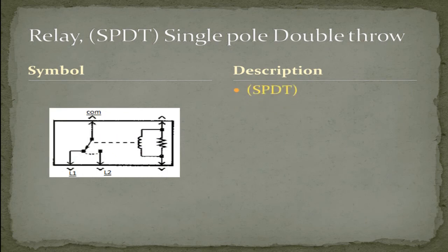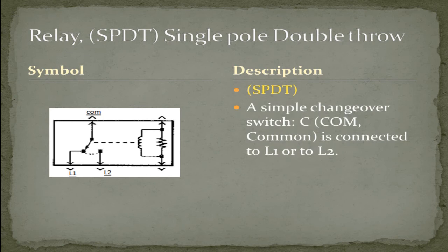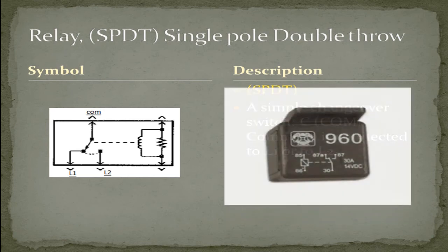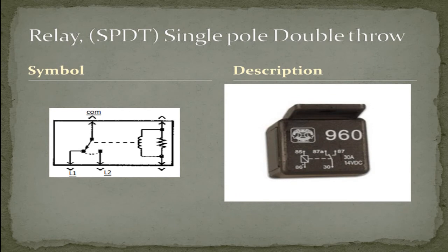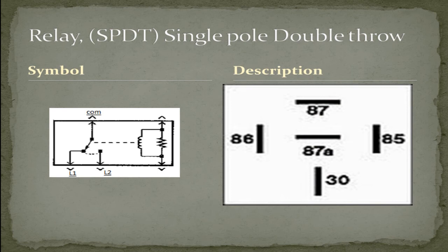Single pole, double throw relay. A simple changeover switch. C (the common) is connected to L1 or L2. As you can see with this schematic, terminals 85 and 86 are your control circuit, where 87A and 87 are your line and 30 your common. And here is the pin out.